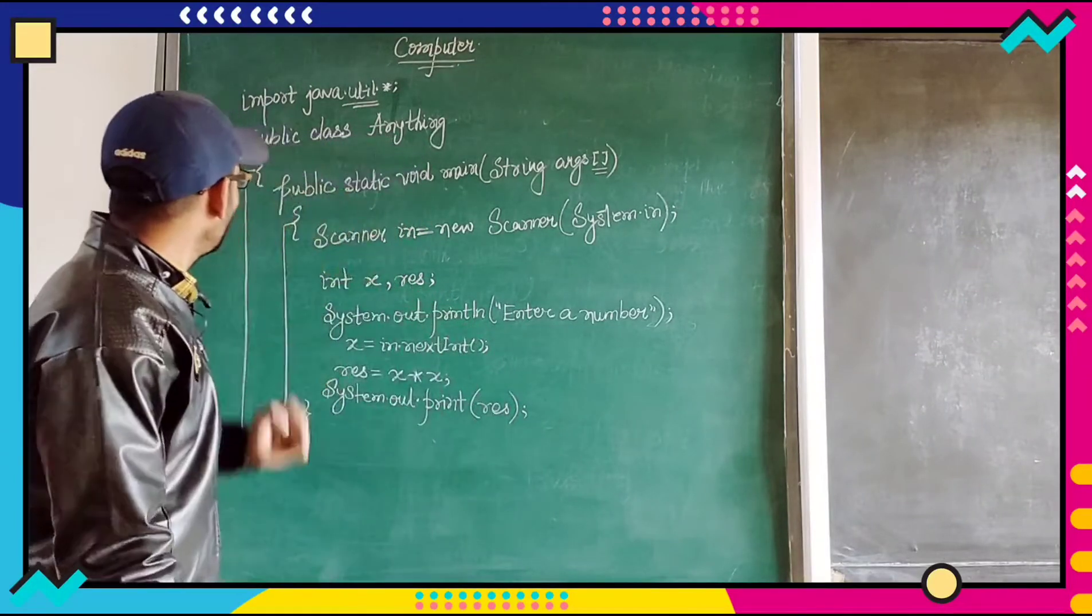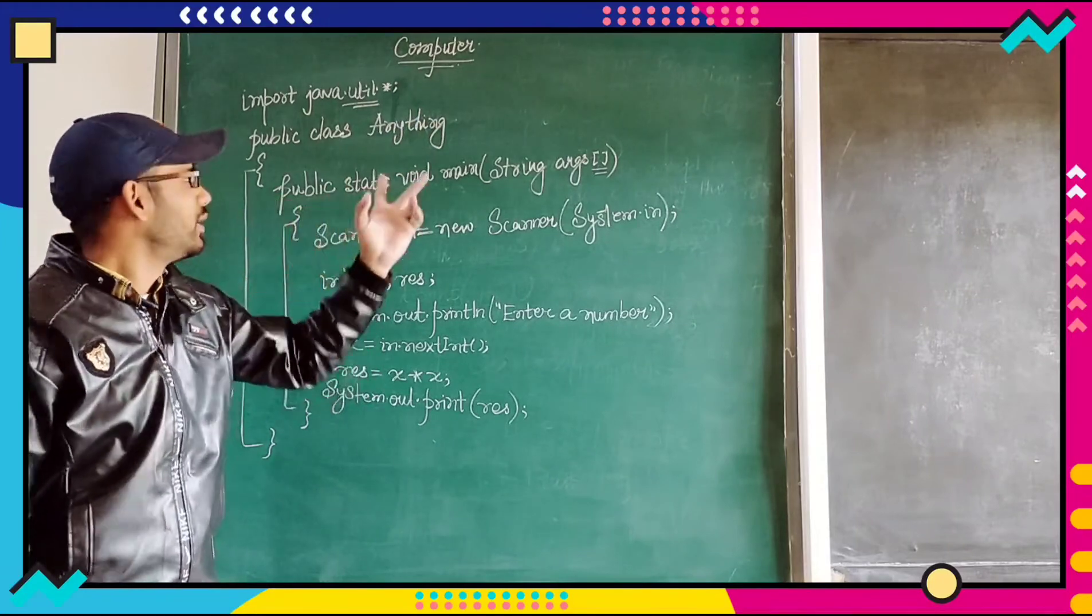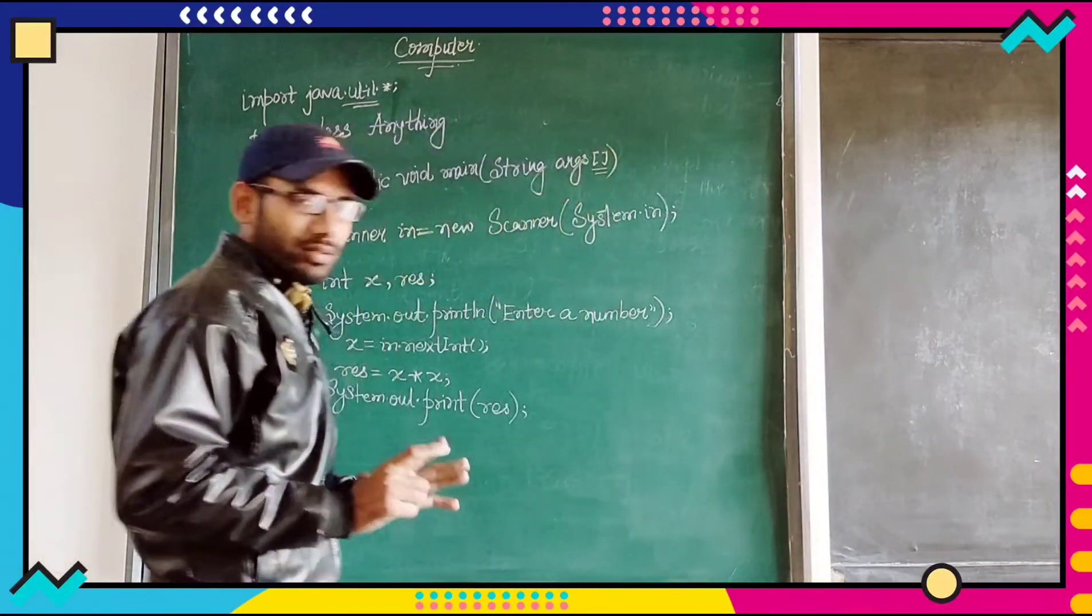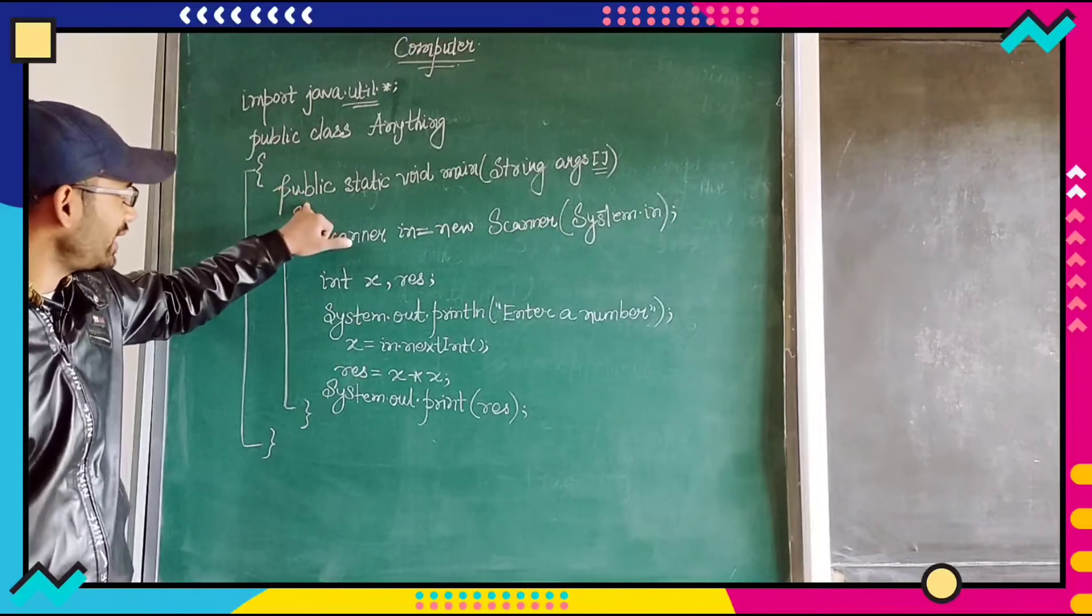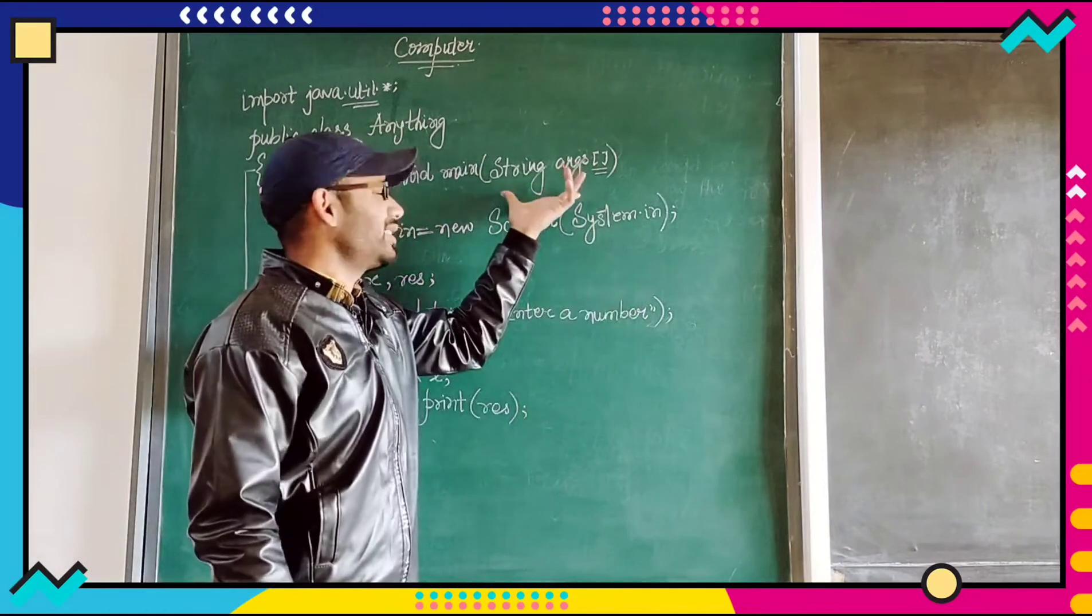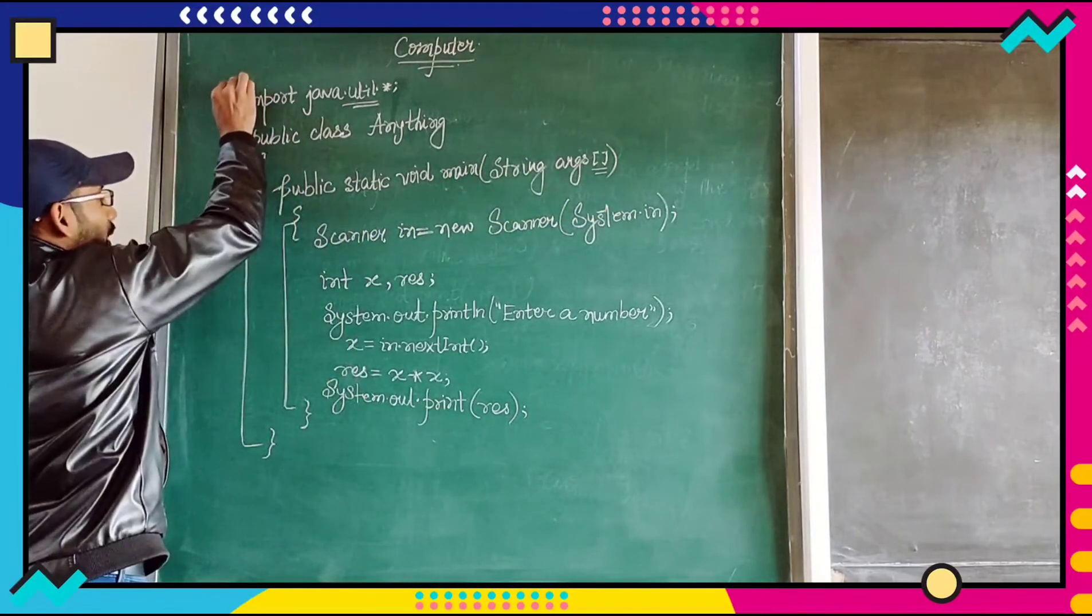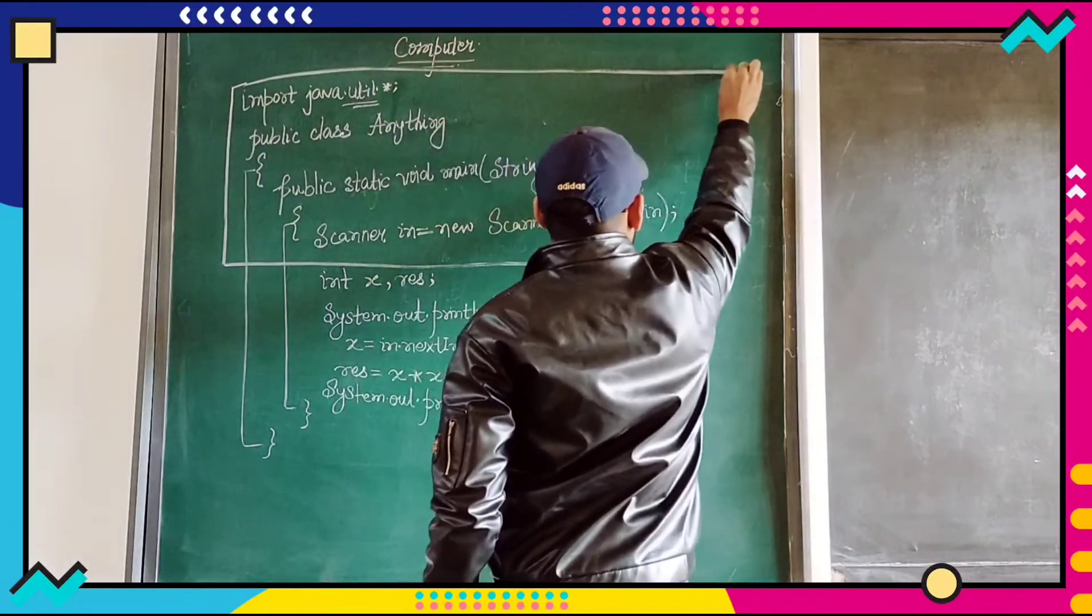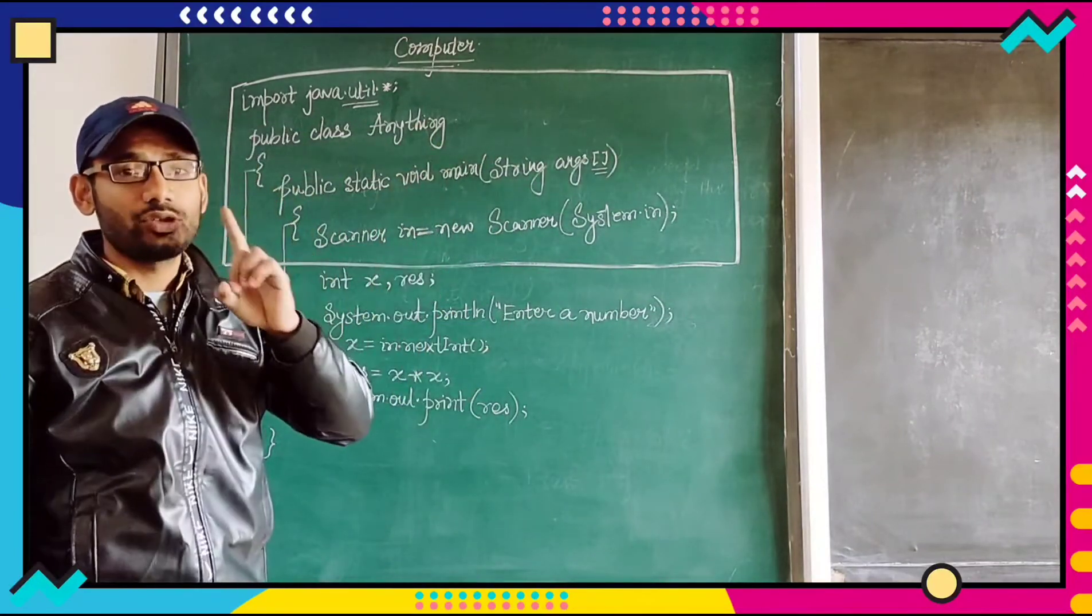After that public class anything, this is the name of the class, you may write anything. The class name can be anything except keyword. After that curvy braces start, after that public static void main string args. What is this string args mean? Passing of string argument. No need of going in detail of all these things. From this part to this part, simply you memorize this part as it is written. No changes should be there except this thing.